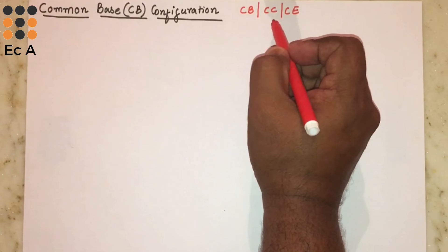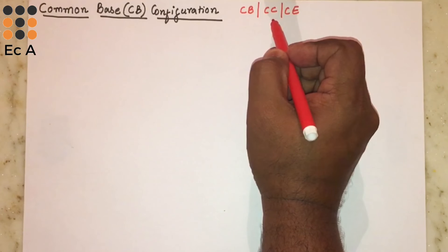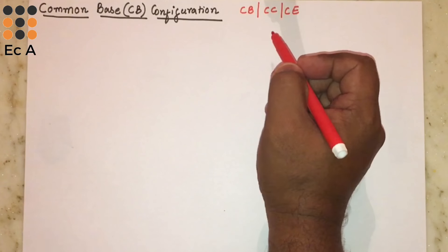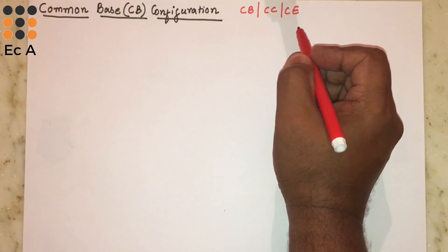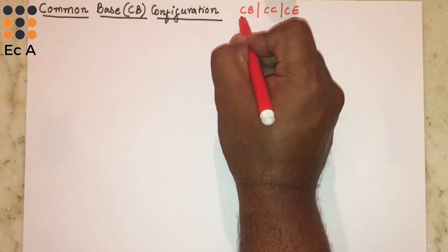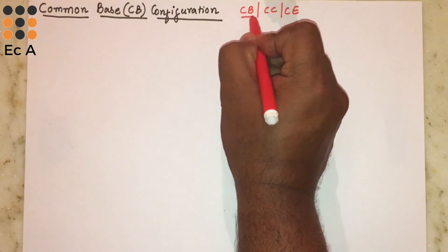Hello friends, welcome to EC Academy. In this lecture we will understand the common base configuration of a transistor. A transistor can be connected in a circuit in three ways: common base configuration, common collector configuration, and common emitter configuration. In common base configuration, the base is common between input and output; in common collector, the collector terminal is common; and in common emitter, the emitter terminal is common.